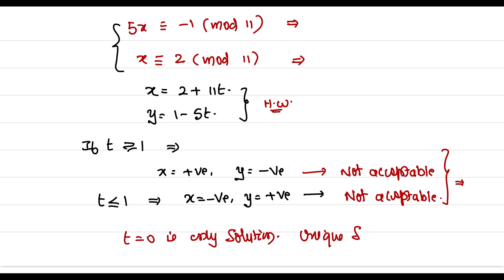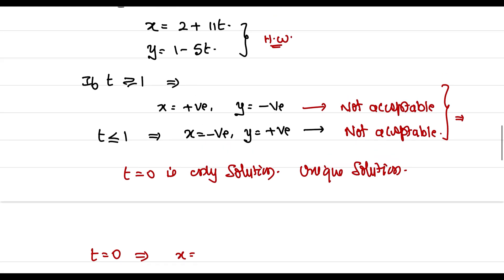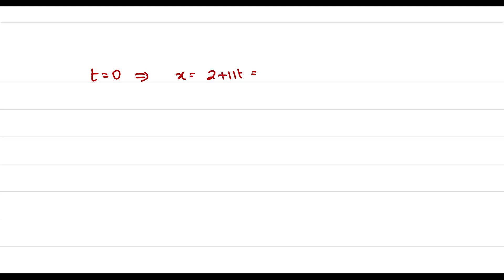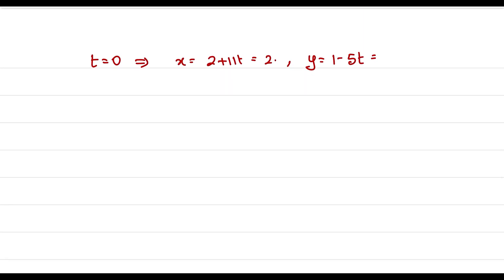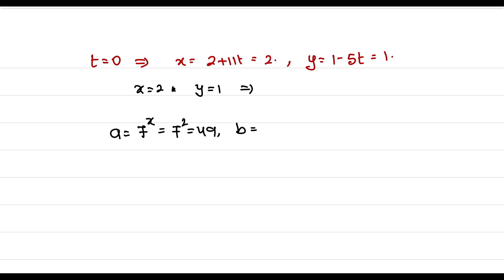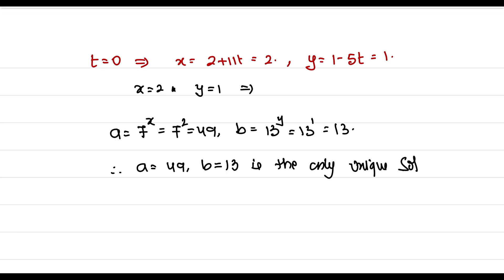When t equals 0: x equals 2 plus 11 times 0 equals 2, and y equals 1 minus 5 times 0 equals 1. That means A equals 7 to the power of x equals 7 squared equals 49, and B equals 13 to the power of y equals 13 to the power of 1 equals 13. Therefore, A equals 49 and B equals 13 is the only unique solution for this problem.